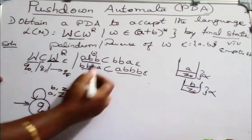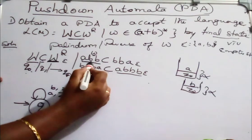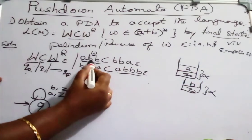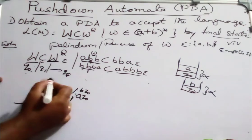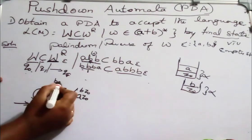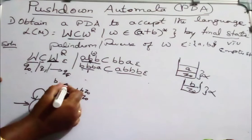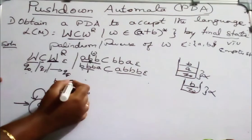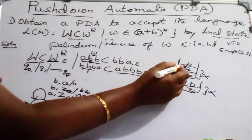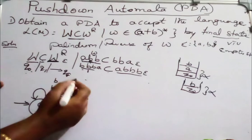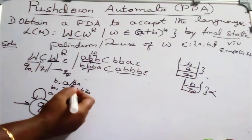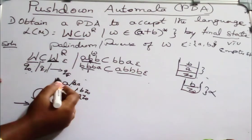Now, the next possibility: after pushing A, the next symbol is B. So top of the stack is A, and input is B. I push B to the stack, making alpha BA — the state remains Q0. Another possibility: input is A and top of the stack is B. I push A to the stack, so alpha becomes AB — still remaining in state Q0.